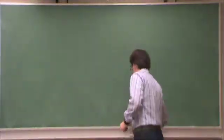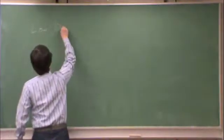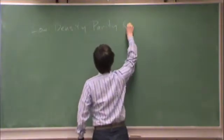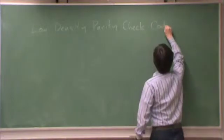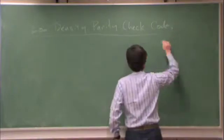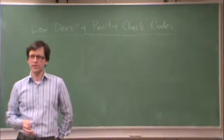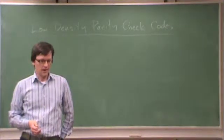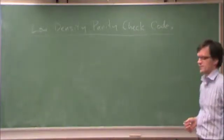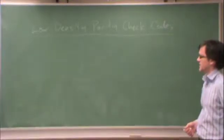Last time we were talking about low-density parity check codes and we discussed how to decode them with the sum-product algorithm. At the end of the class I introduced a related class of codes called repeat-accumulate codes, which have a structure much similar to LDPC codes. They are much easier to encode and they also have excellent decoding performance.